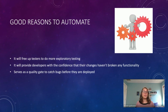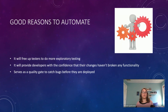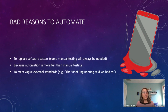Automation also serves as a quality gate to catch bugs before they are deployed. If you've got tests set up for your production deployment and the tests are failing, you can roll your deployment back. Now here are some bad reasons to automate.